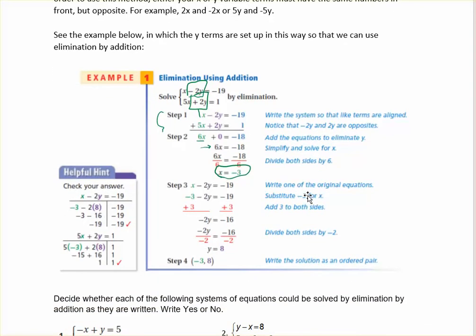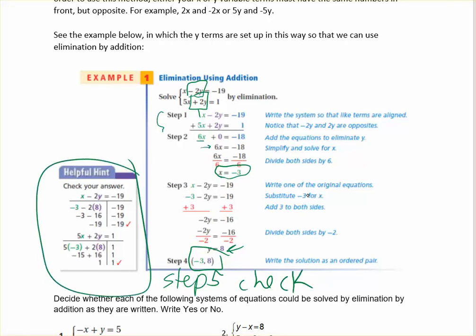Then we just divide both sides by 6 and we get our first variable answer, which is negative 3. Our next step is to take that answer and plug it back into one of the original equations and solve for the other variable. So we would put x equals negative 3 back into whichever equation looks easier, and then solve for y. That's the same step we did when solving with substitution. Once you get your other variable, write it as an ordered pair, and then check your answers by plugging them back into both original equations and making sure you get a true statement.